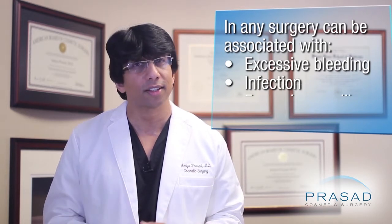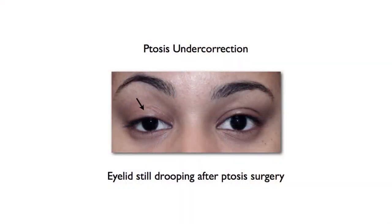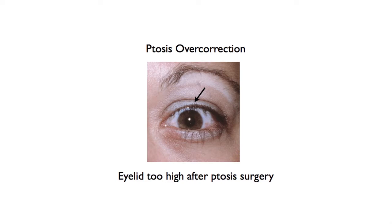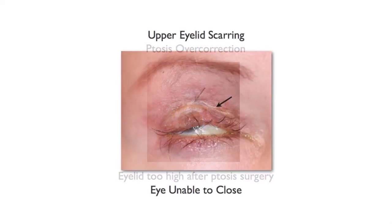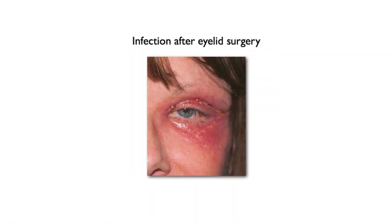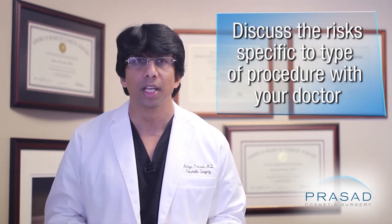Any surgery can be associated with excessive bleeding, infection, as well as excessive swelling. Ptosis surgery risks include undercorrection where the eyelid still droops, overcorrection where the eyelid is too open, as well as undesirable cosmetic appearance, scarring, and eye problems related to exposure and other causes of inflammation and infection. Since there are different methods for ptosis surgery, it's important to discuss the specific risks for the procedure you're considering and how to minimize these risks.